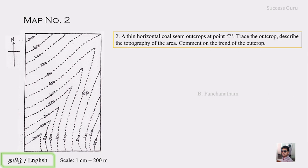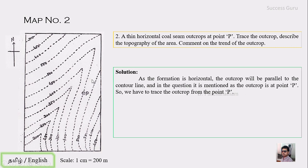Now the second question: a thin horizontal coal seam is outcropping at a point P — trace the outcrop, describe the topography, and comment on the trend. This is nearly the same as the previous question, but the difference is that the location of the outcrop is given in the map itself. You can see there is a point P on the 450-meter contour. According to theory, if the formation is horizontal the outcrop will be parallel to the contour, so we simply trace that contour.